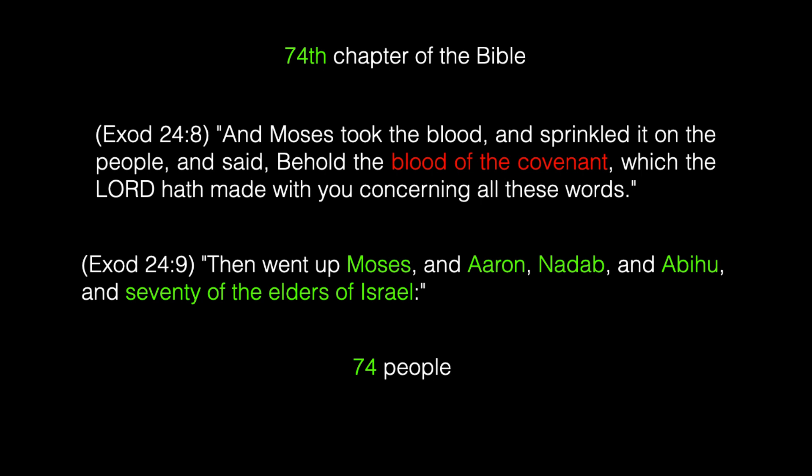The number 74 occurs in the 74th chapter of the Bible, which is Exodus 24 — a very important chapter. Verse 8: 'And Moses took the blood and sprinkled it on the people and said, Behold, the blood of the covenant, which the Lord hath made with you concerning all these words.' Verse 9: 'Then went up Moses and Aaron and Nadab and Abihu and 70 of the elders of Israel.' Seventy-four people went up — there's the number 74 in the 74th chapter of the Bible. The blood of the covenant, 74, Jesus.